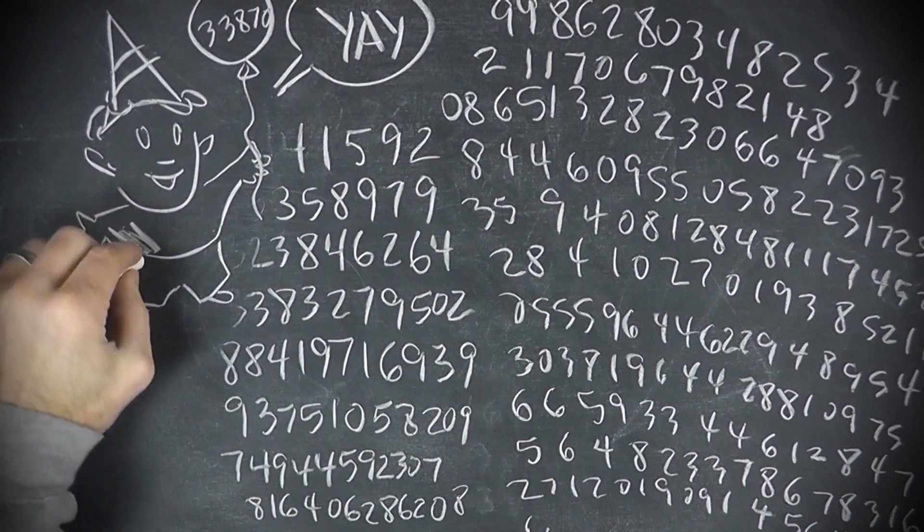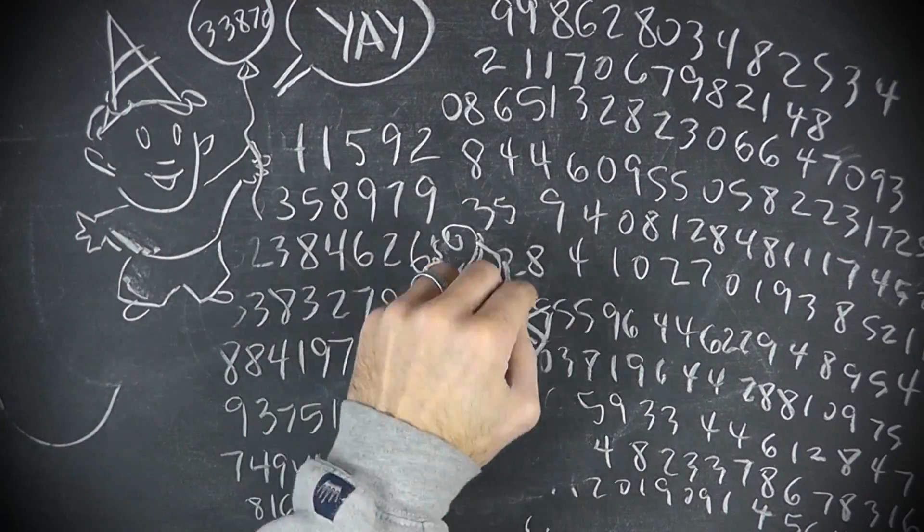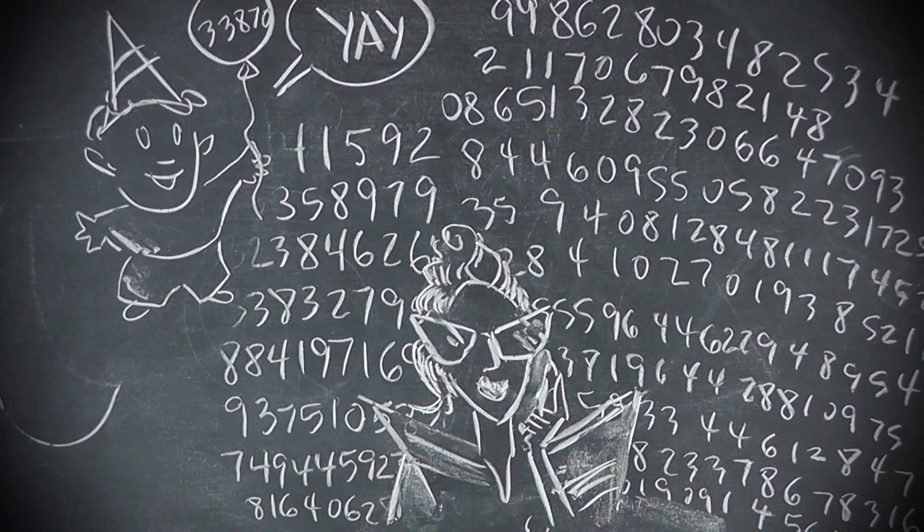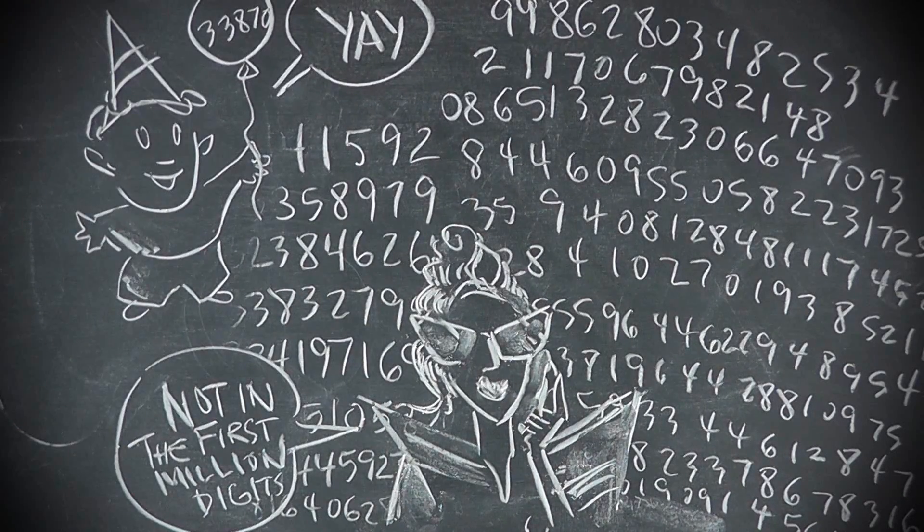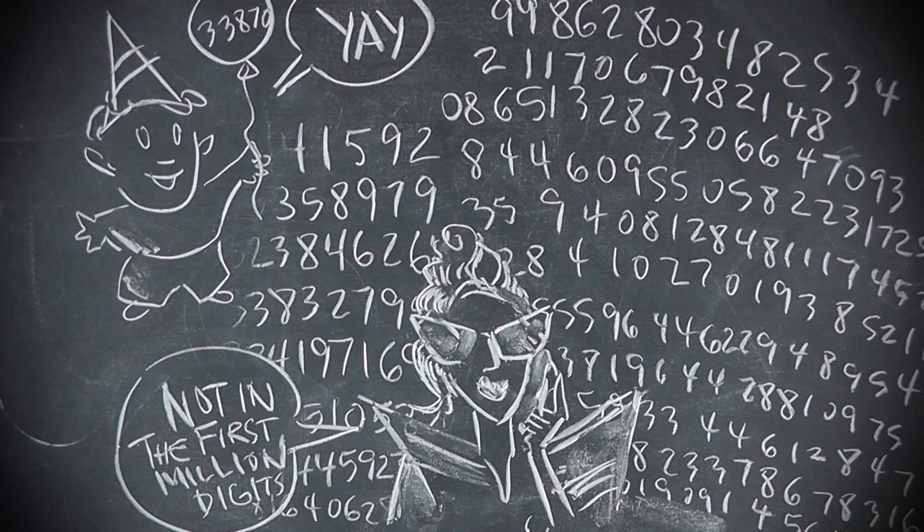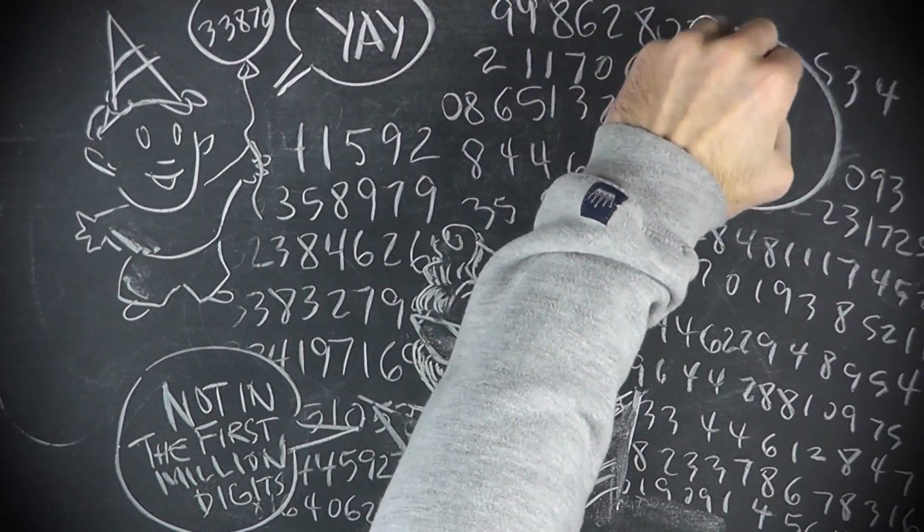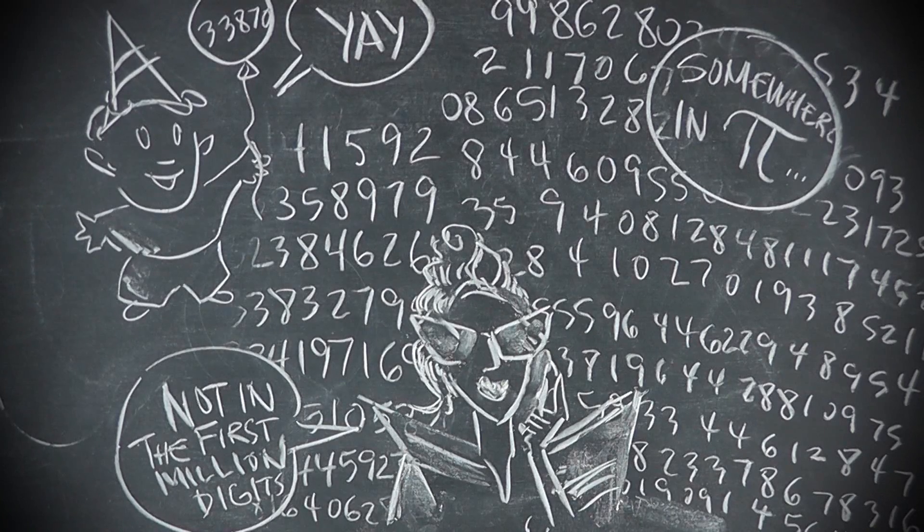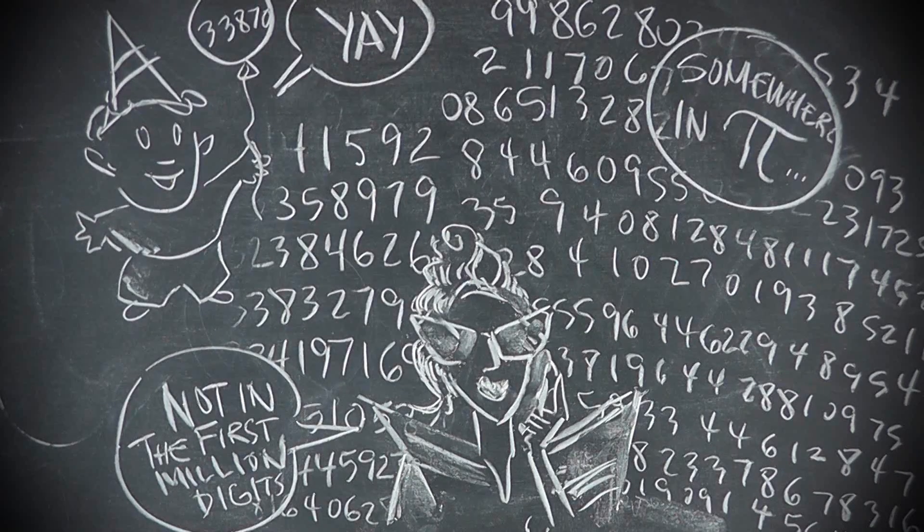But what about something longer, like your phone number? My seven-digit phone number doesn't occur within the first million decimal digits. But because the digits are random and unending, I'm certain to find it if I look far enough. In fact, for this reason, you can find any number you look for somewhere in Pi.